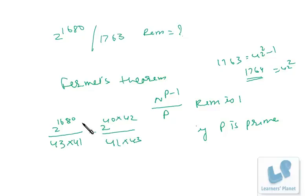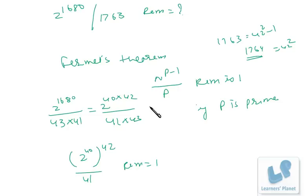Now how is it simple? 2 raised to 40, raised to 42, that's actually 2 raised to 1680. If it is divided by 41, remainder will be 1. Just match: n raised to p minus 1 divided by p, remainder is 1 if p is prime.